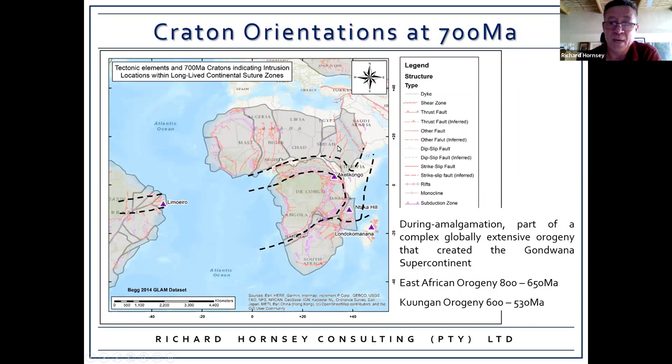This amalgamation took place in two or three major events. The East African Orogeny was the first, starting around 800 and finishing around 650 million years. Then the Kuugan Orogeny from 600 to 530 million years accreted southern Africa, Antarctica, and Australia onto the southern margin of Gondwanaland.